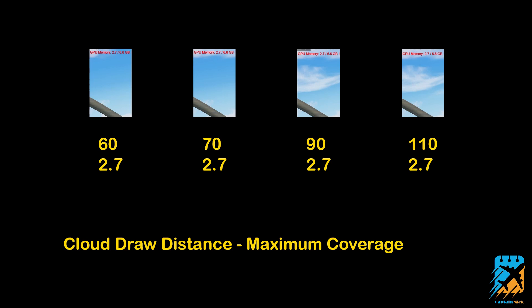And then swapping over to our cloud draw distance. I went ahead and left it at maximum coverage on this one, just to see what sort of hit we get. This is miles out as far as visibility. So we got 60, 70, 90, and 110, all with the exact same VRAM usage. Obviously if you have it at 110, that's a much bigger frame rate hit than at 60. And same thing when it comes to the cloud coverage density. Not seeing any real difference in VRAM usage, but if you got some spare VRAM and some extra frames you want to get rid of, go right ahead and crank it right up to 110.